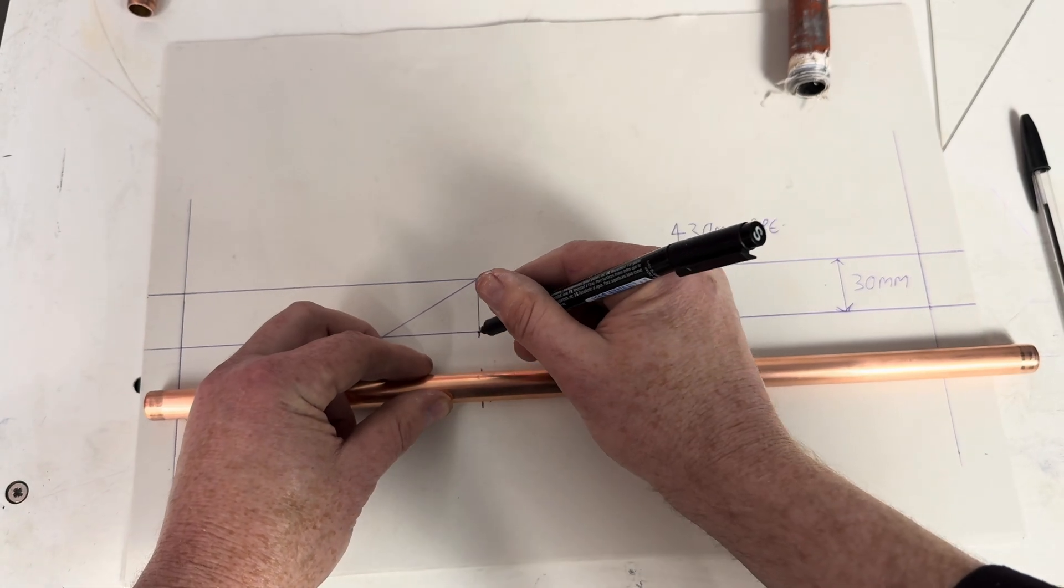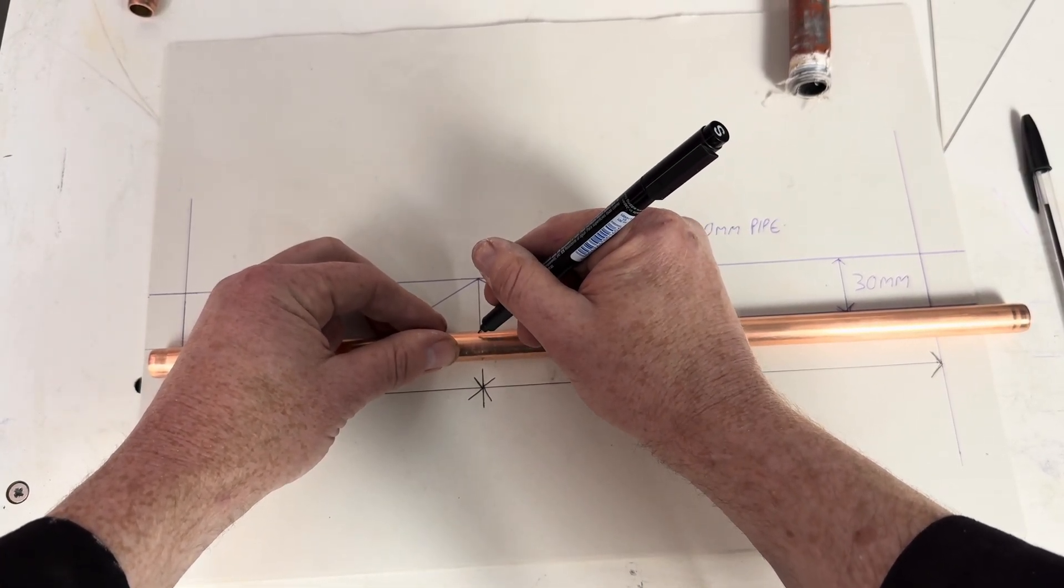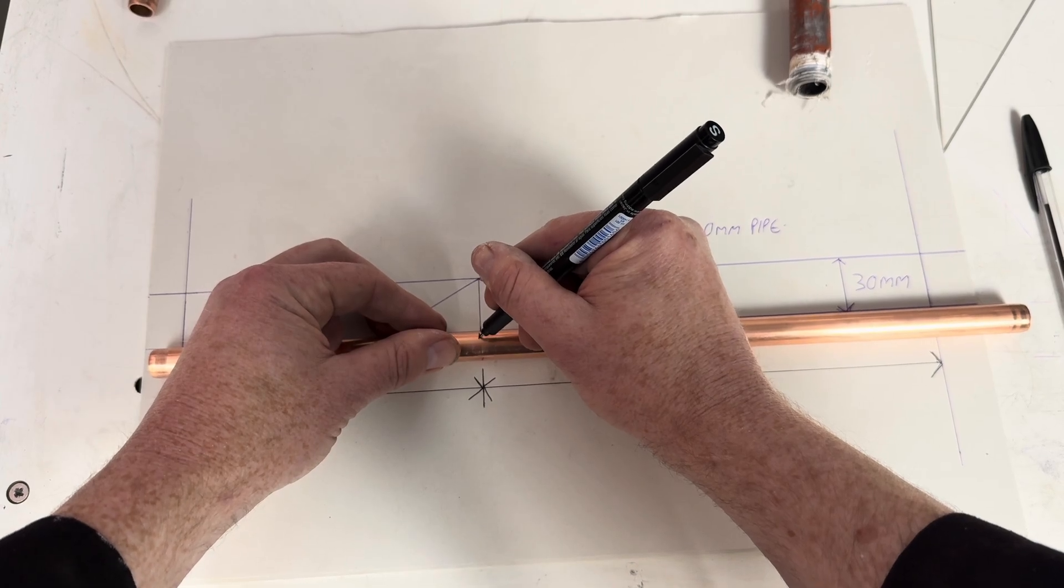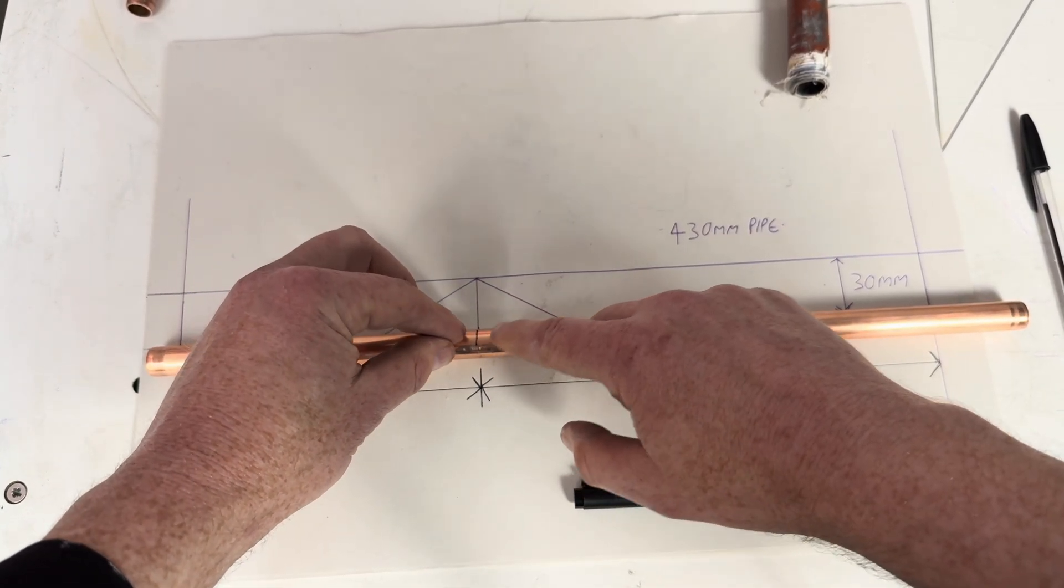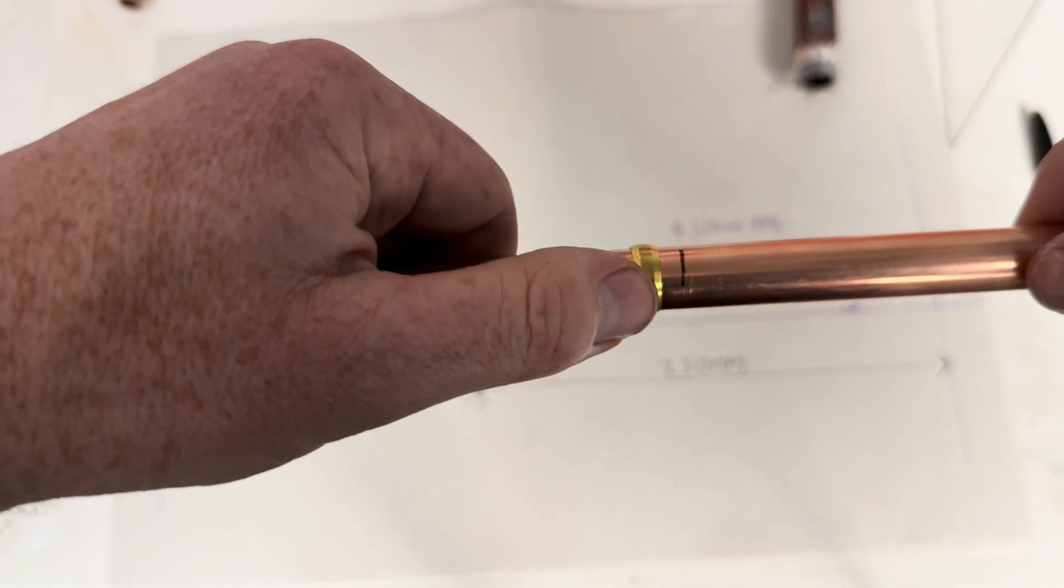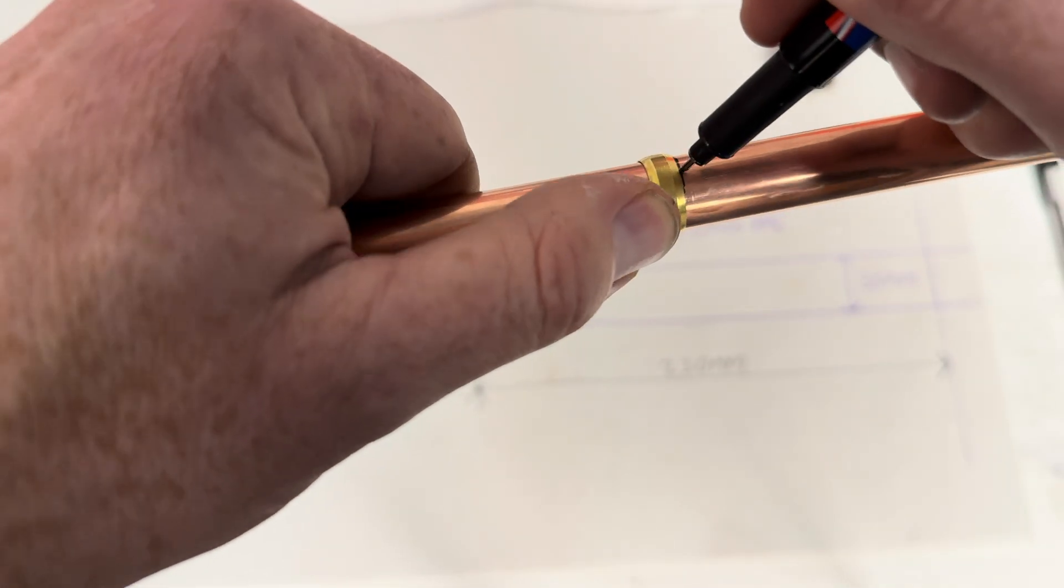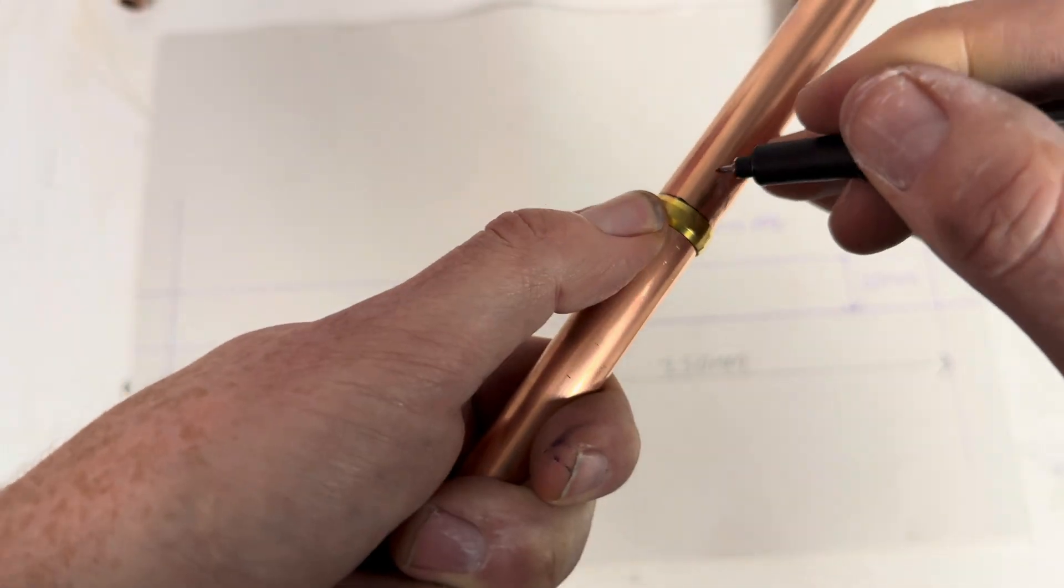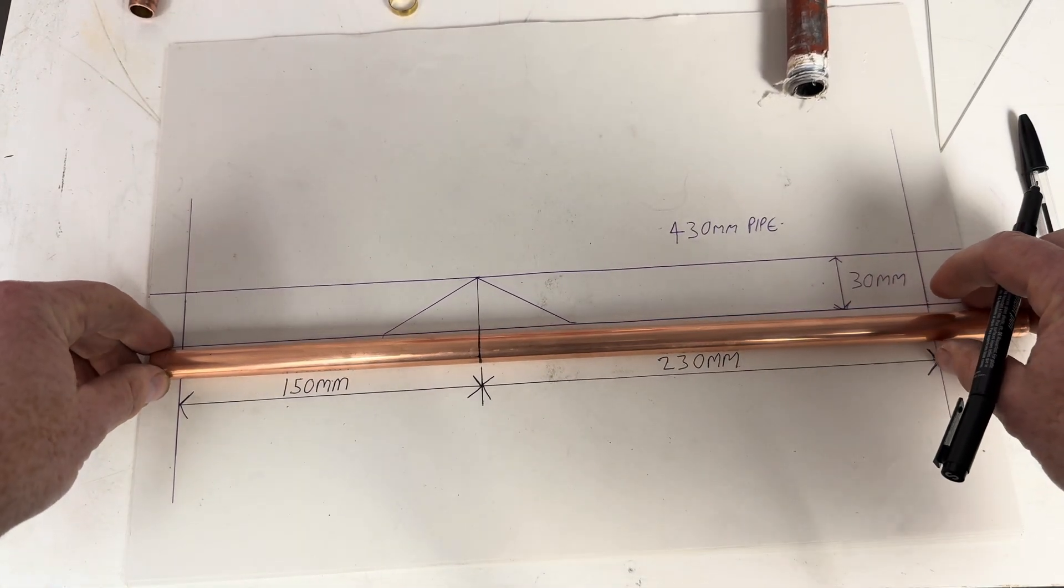What we then do is we're going to mark here. So this is where we want to find the centre of the bend to be. I always like to use an olive for this, it gives a nice, accurate centre of the bend.